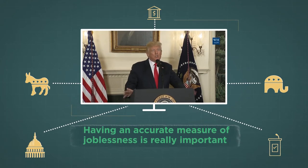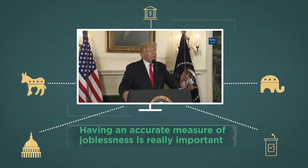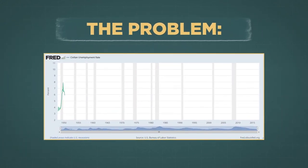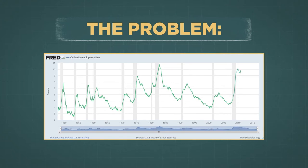Otherwise, these policies will be badly targeted. The problem is, the official unemployment rate doesn't give us a full picture of the job market's health. Luckily, we can use a survey the government already conducts to fix it. All we have to do is listen to what people are already telling us.